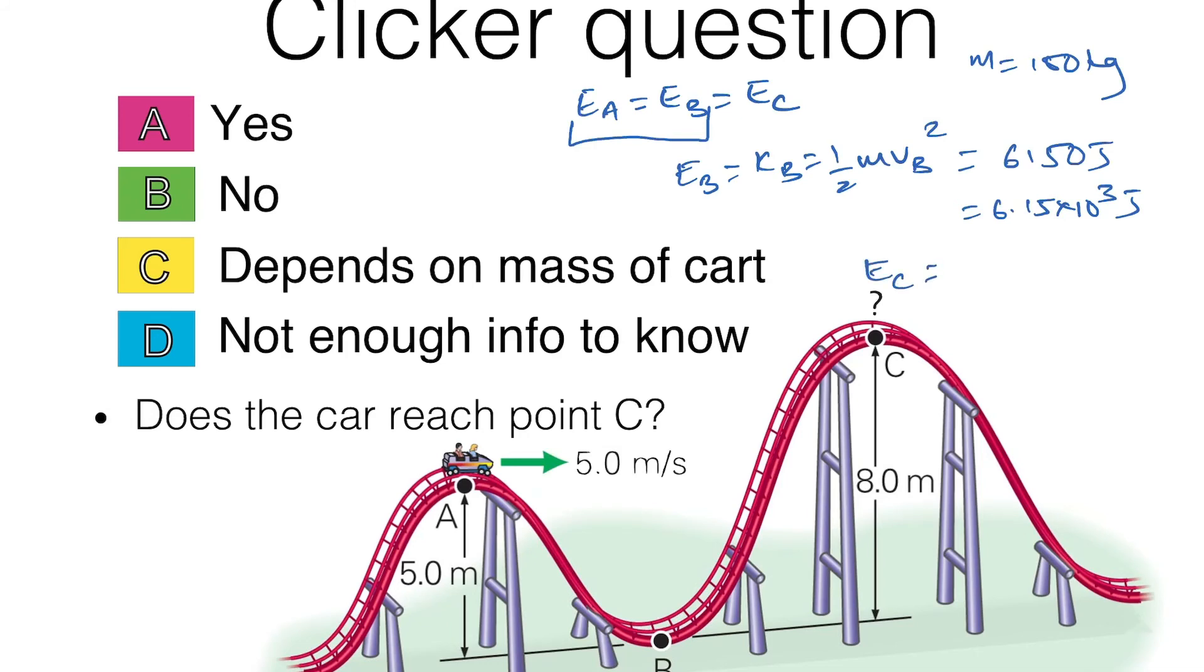So energy at C, let's say it gets to point C and stops. That means there's no kinetic energy, everything at that point is in the form of potential. Let's say it makes it to that point. So that is mg height C, which is 100 times 9.8 times height C, which is 8, so that is 7840 joules.